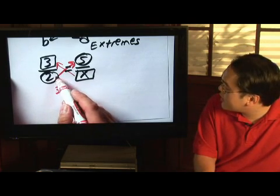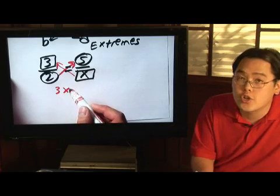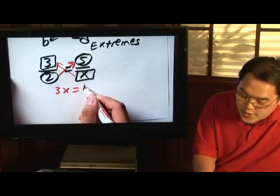And then, take this denominator and multiply it by the other numerator, so 2 times 5 is going to be 10.